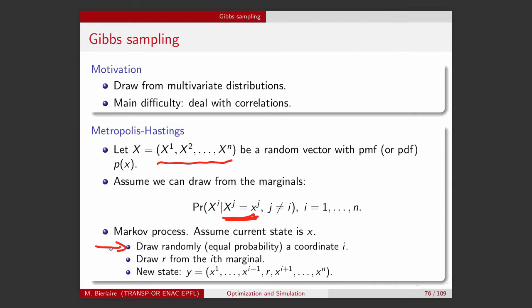And then, what we do is that we use this marginal to draw a new value for coordinate i. So the new state, y, is exactly the same state as before except for coordinate i, where we have replaced X_i, the previous value, with the value of r that has just been drawn from the marginal distribution.